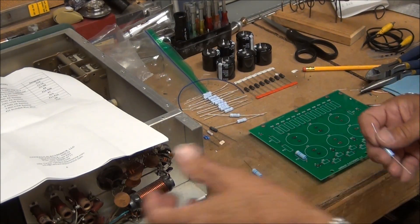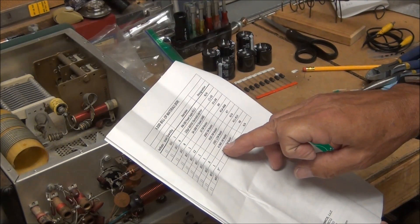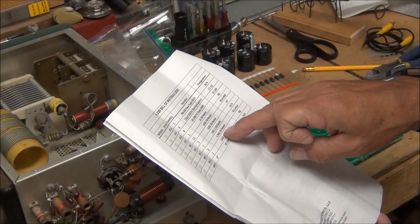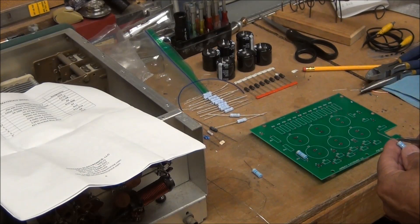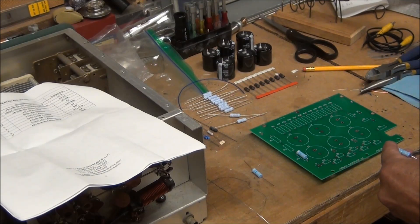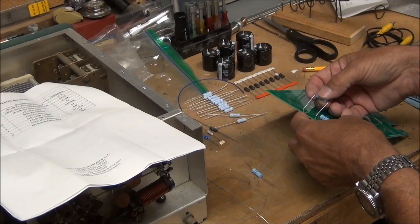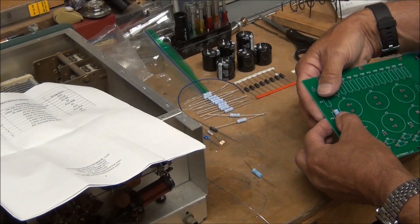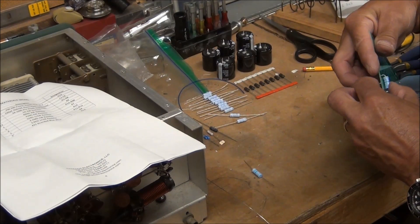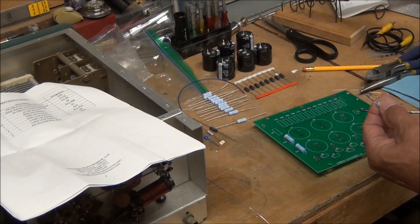Right now I'm installing R11 through R12, which are three 4.7 megaohm resistors that are 1 watt each. I'm installing them so that the color code is all in the same direction so they're easy to read if you were to ever look in here again.